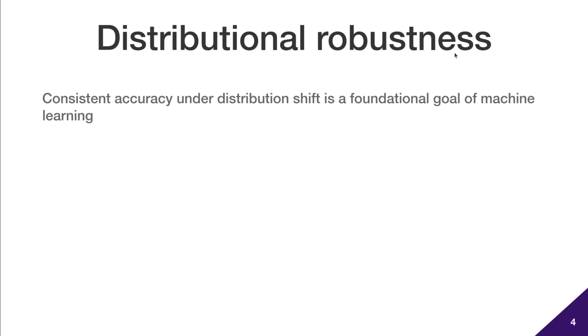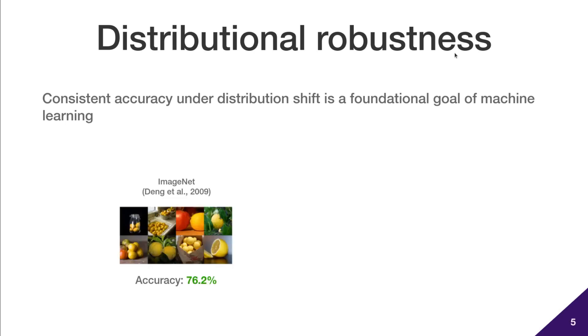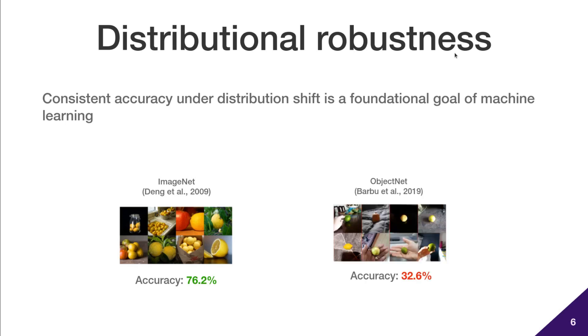Robustness to distribution shift is still challenging to current systems. For instance, consider a ResNet 101 trained on ImageNet, which has an accuracy of 76% on this dataset. If you take the same model and evaluate on ObjectNet, which has objects seen from new viewpoints or new backgrounds, accuracy drops by 44 percentage points.